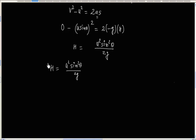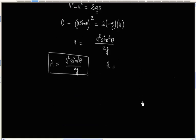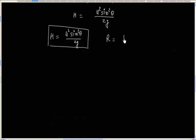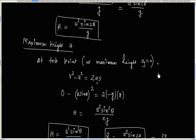One can remember these results: maximum height h is equal to u squared sin squared theta by 2g; range is equal to u squared sin 2 theta by g; and time of flight is 2u sin theta by g.